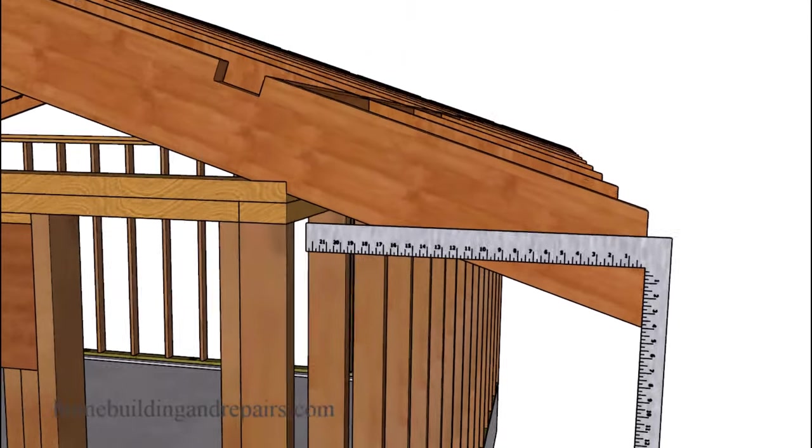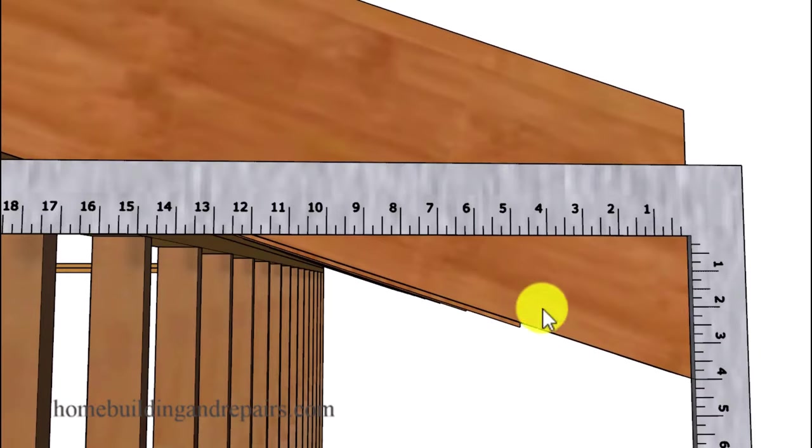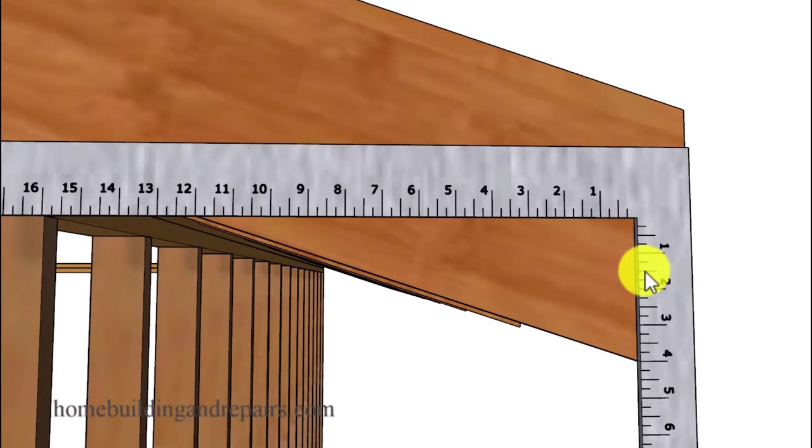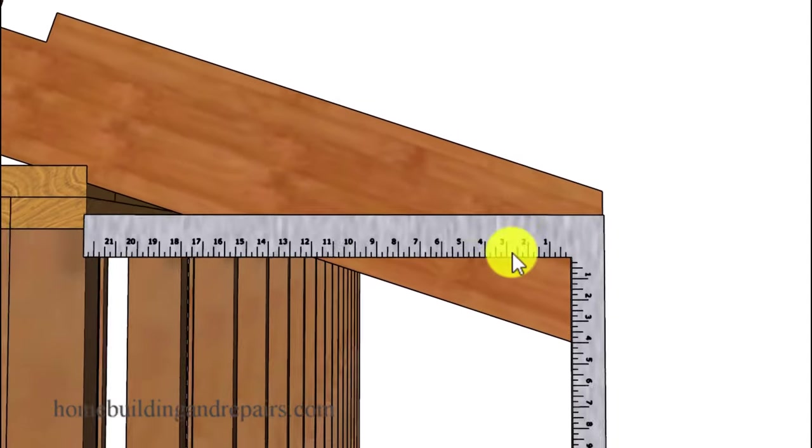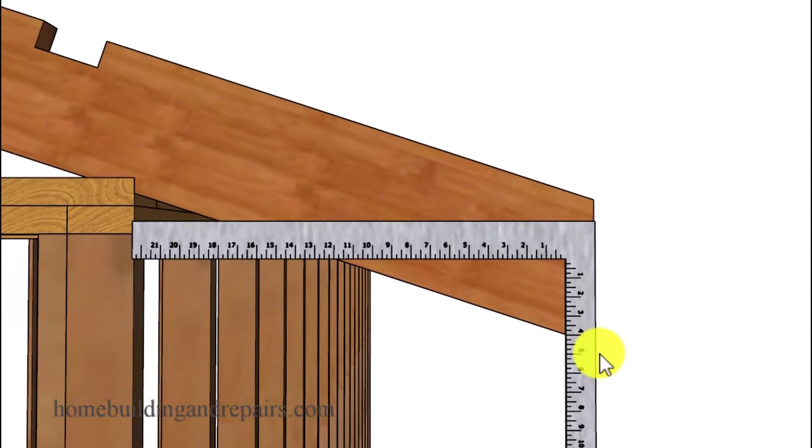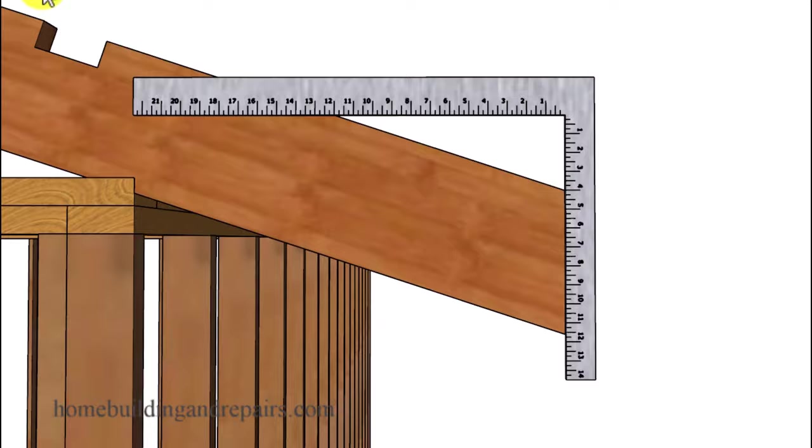Again, we're going to be lining up our 4 and 12 measurements on our framing square. And we don't have to use the inside of the framing square. We can use the outside of the framing square also. And we can even reposition the framing square.